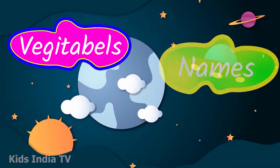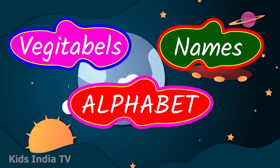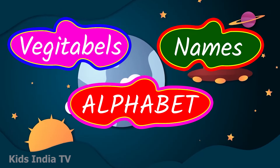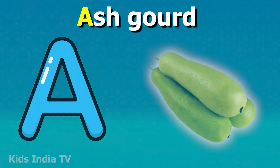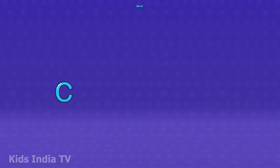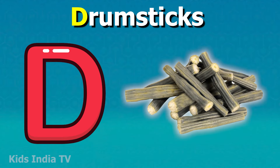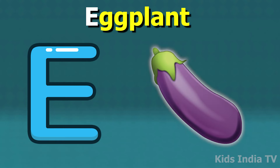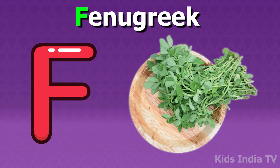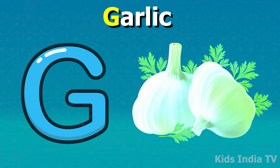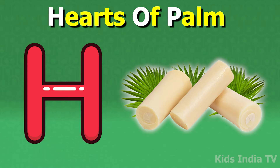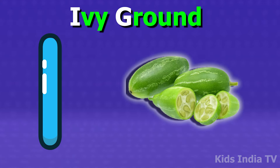Vegetable names according to alphabets: A for ash gourd, B for broccoli, C for carrot, D for drumstick, E for eggplant, F for fenugreek, G for garlic, H for heart of palm, I for ivy gourd.